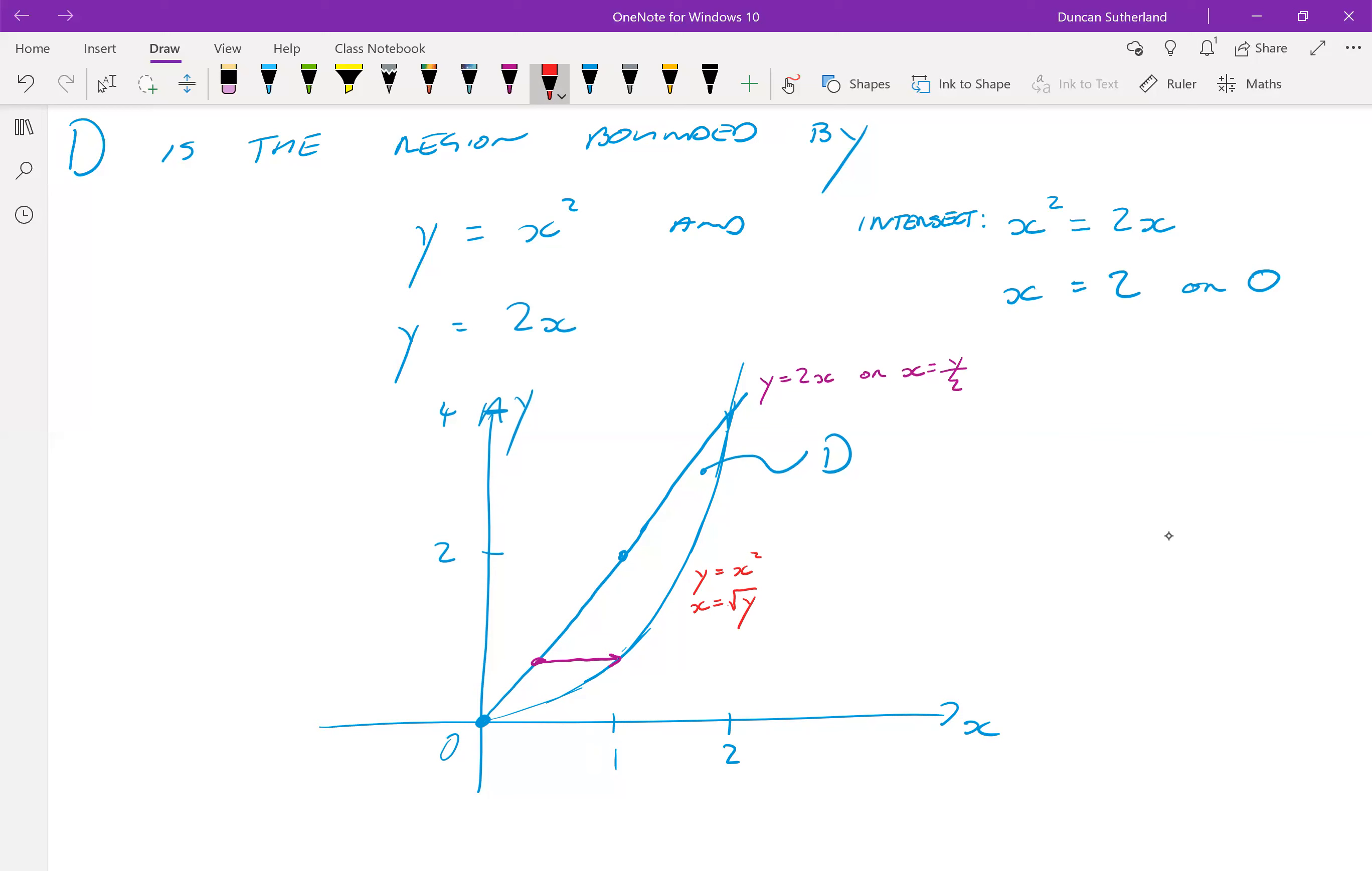Alternatively, we can describe this region by integrating with respect to y first. That is, we pick a value of x, we see that we start on the line y equals x squared, run all the way up to the line y equals 2x.